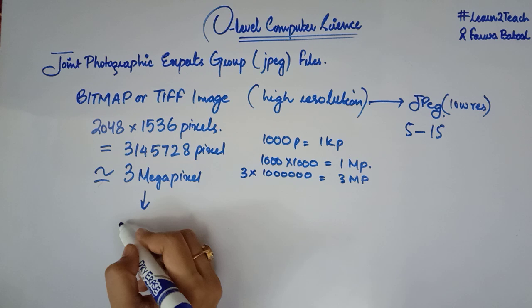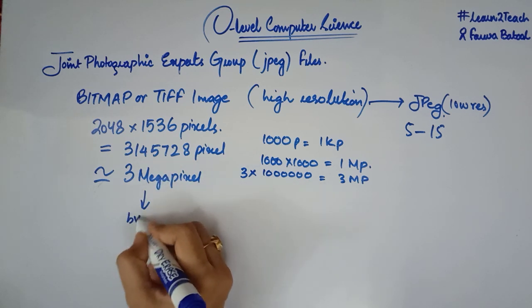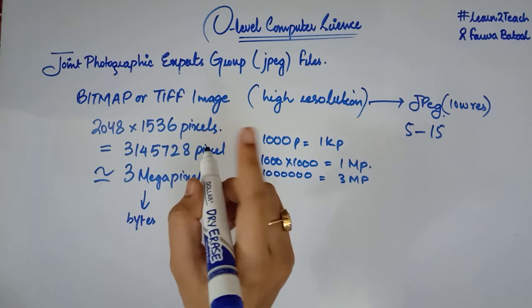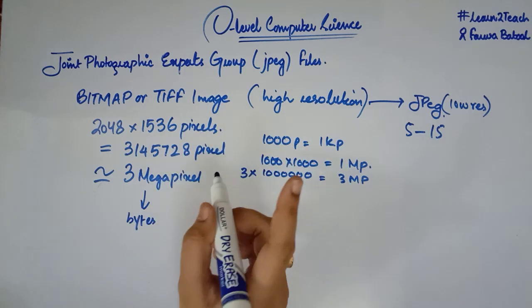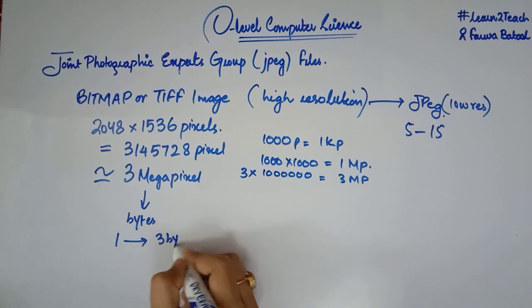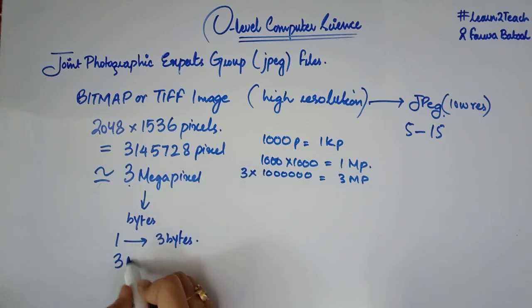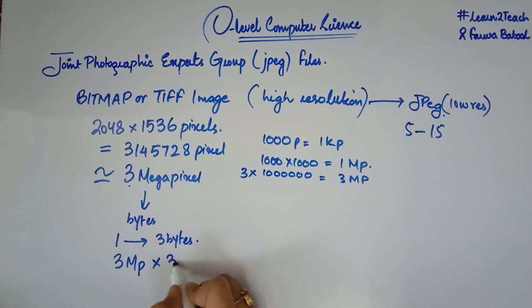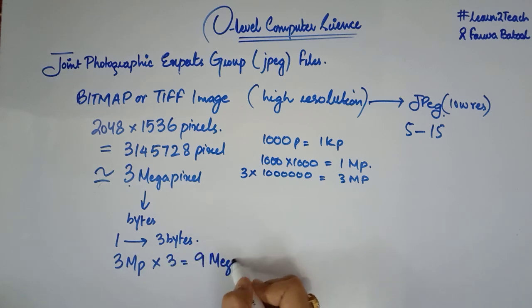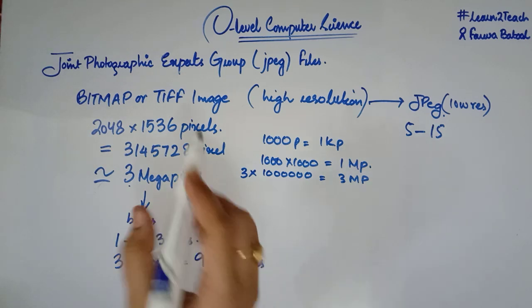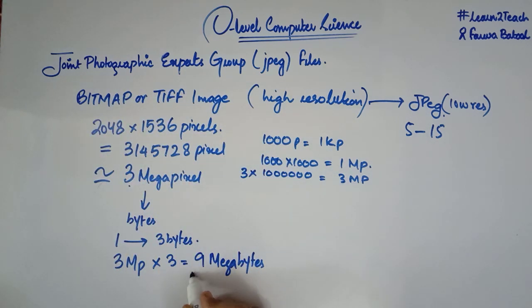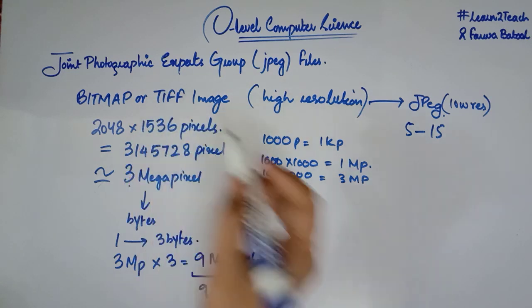To convert this into file size in bytes: 1 pixel takes 3 bytes to store. So a 3-megapixel image requires 3 × 3 = 9 megabytes. This means the bitmap or TIFF image has a file size of 9 megabytes, and the computer needs 9 megabytes of memory to store it.